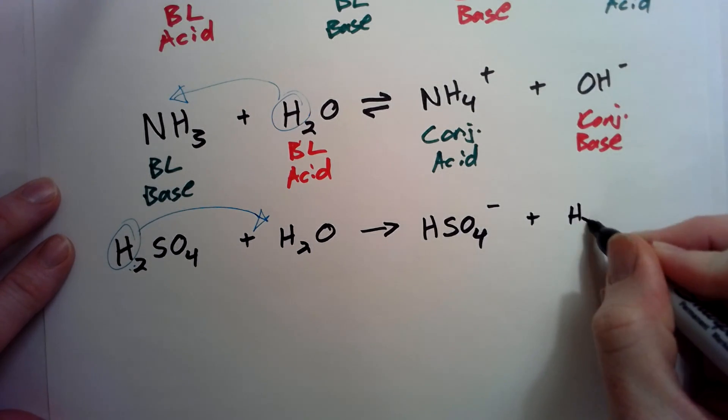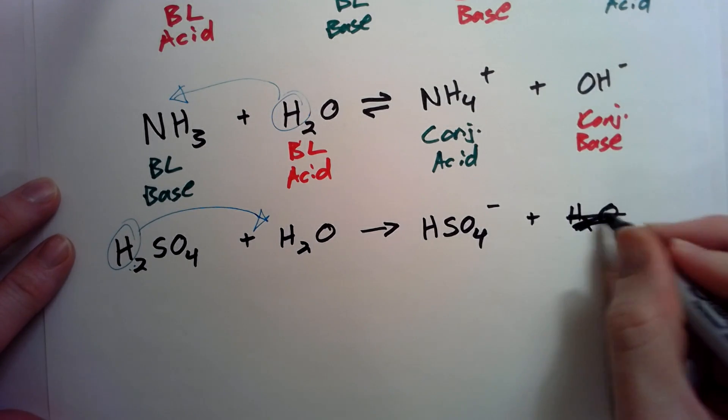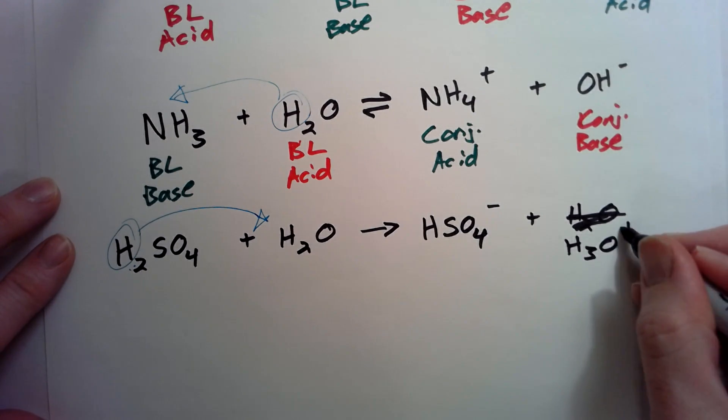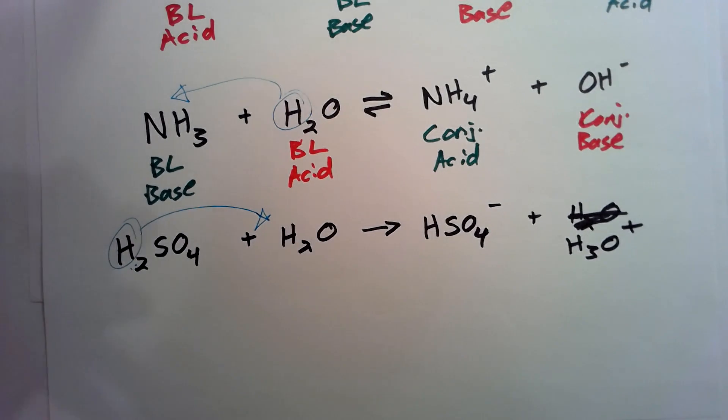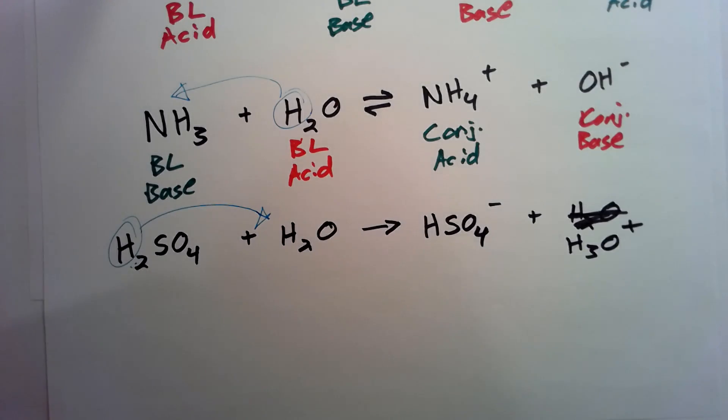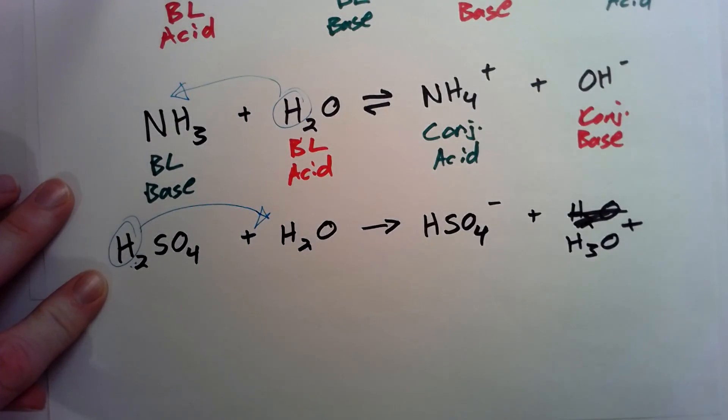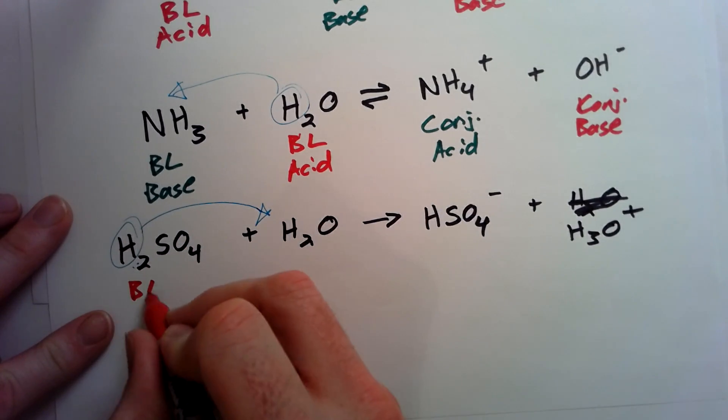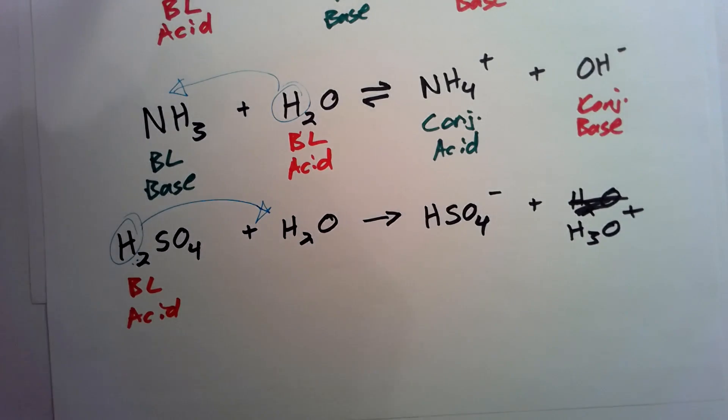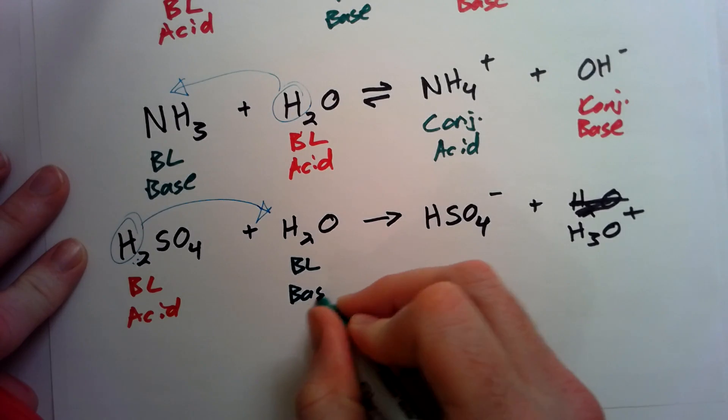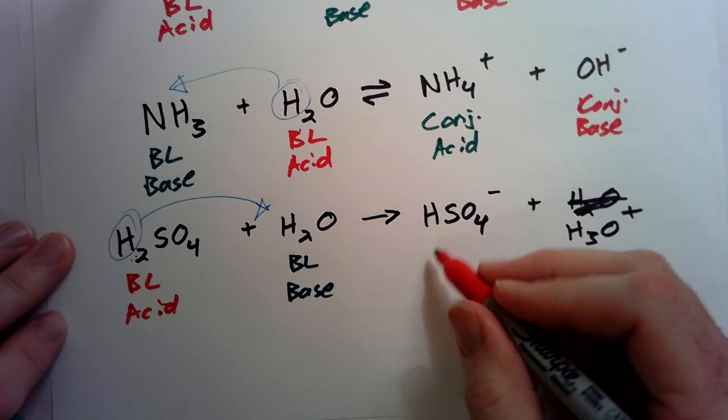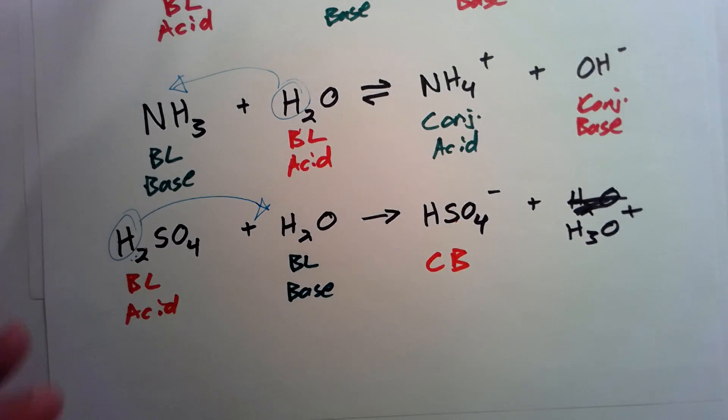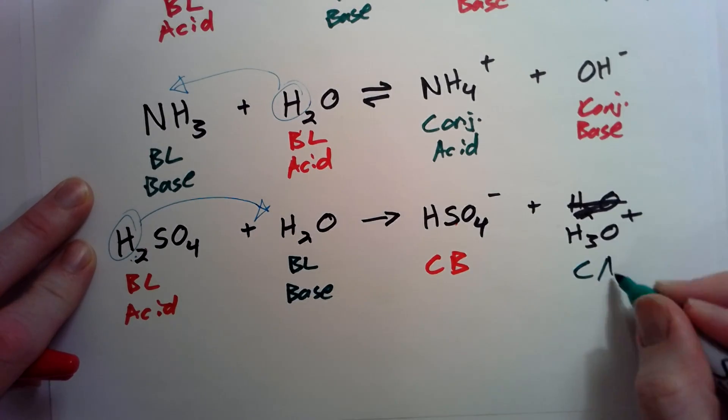And then since H2O gained a positive charge, I messed that up, it became H3O. It has an extra positive charge, so it's going to be H3O+. The more positive one is always going to be your acid, and the more negative one is always going to be your base. So this is my Bronsted-Lowry acid. This is my Bronsted-Lowry base. This is my conjugate base because this became this, and this is my conjugate acid.